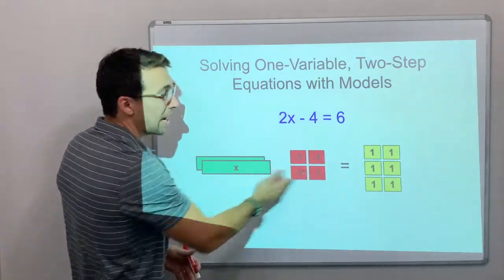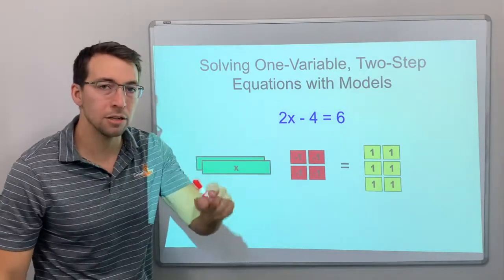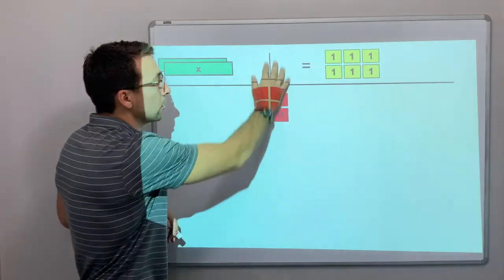How do we do that now with tiles? Well, let's check it out. We've got to use zero pairs. So first off, we want to get rid of the 4, right?